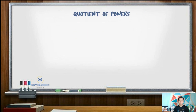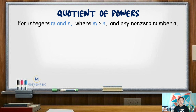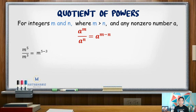Next, quotient of powers. For integers m and n where m is greater than n, and any non-zero number a, a raised to m over a raised to n equals a raised to m minus n. When multiplying terms with the same base, we add exponents; when dividing terms with the same base, we subtract exponents. For example, m to the 5th divided by m cubed: since the bases are the same, we get m raised to 5 minus 3, so the answer is m squared.